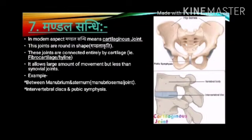Mandala Sandhi: In the modern aspect, Mandala Sandhi means cartilaginous joints. These joints are round in shape i.e. Mandala Kruti. These joints are connected entirely by cartilage, either fibrocartilaginous or hyaline. It allows a large amount of movement but less than the synovial joint. It is present between the mandible and sternum, intervertebral joints, wrist, and pubic symphysis.